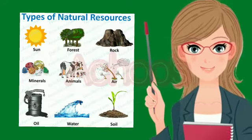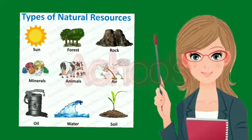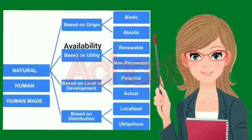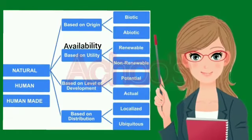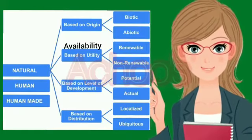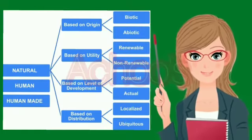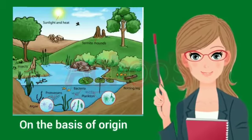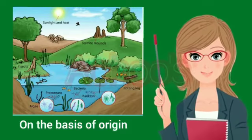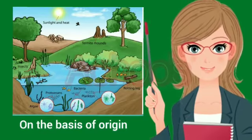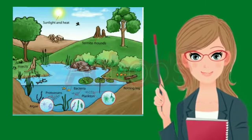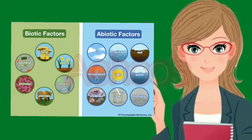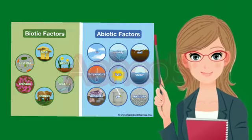These natural resources can be classified under four categories. They are: on the basis of origin, availability, level of development, and distribution. Let us see the first one — on the basis of origin. Here the natural resources are further divided into biotic and abiotic resources.